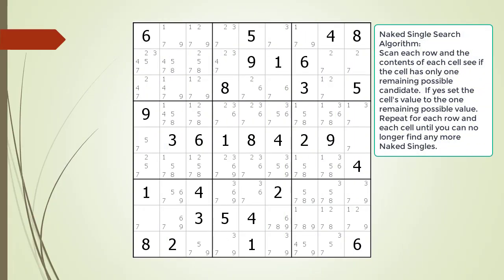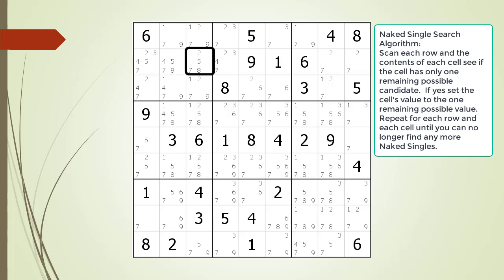Consider the following Sudoku. We begin searching for naked singles. We scan each row and the contents of each cell looking to see if the cell has only one remaining possible candidate.